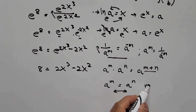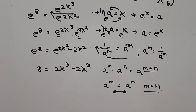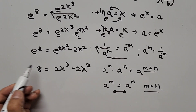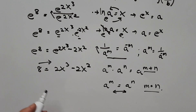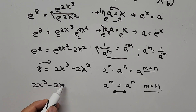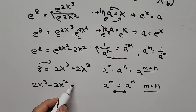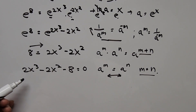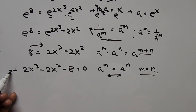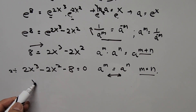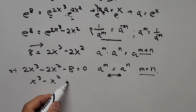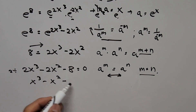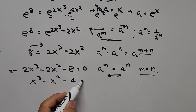Rearranging the equation by transposing to the right-hand side gives: 2x cubed minus 2x squared minus 8 equals 0. We can reduce this to its lowest terms by dividing everything by 2, giving us: x cubed minus x squared minus 4 equals 0.